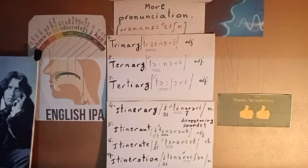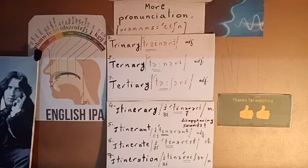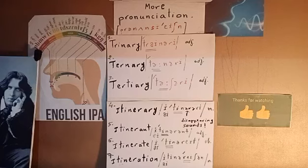Let me go back to the first word of the second group and explain how the sounds work. It's itinerary. The second syllable 'T' should be stressed. In this word, we have three disappearing sounds: the schwa, the 'r' sound, and also another schwa sound. We can say itinerary, without pronouncing the schwa and the 'r' and 'a' sounds. I repeat: itinerary, or itinerary.